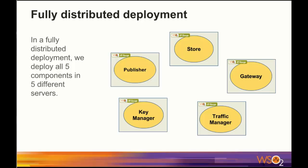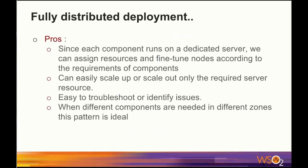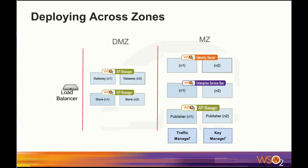In a fully distributed deployment, we deploy all 5 components on 5 different servers. Since each component runs on a dedicated server, we can assign resources and fine-tune nodes according to the requirements of each component. In the case of scaling up or scaling out, we can easily do it for the required resource only, and we can troubleshoot or identify issues easily. When different components are needed in different zones, this pattern is identified as ideal. Most API Manager distributed production deployments are deployed in multiple zones, which adds an additional layer of security to the organization's LAN, and WSO2 API Manager 2 is capable of that via scalability convenience. Components can be deployed in a militarized zone or demilitarized zone.